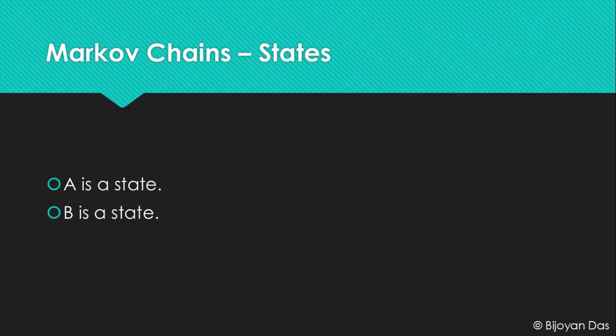Before we get started with n-gram modeling, you need to know about Markov chains. Markov chains are a chain of states. You can have a chain of different states — say A, B, C, D, E, F, G, H, I, J, K, L, and so on. When you write them in a sequence you get a chain of different states, going from state A to state B to state C and so on.